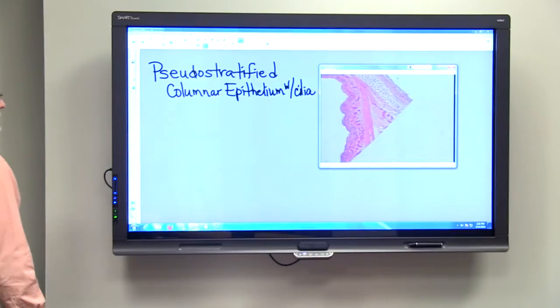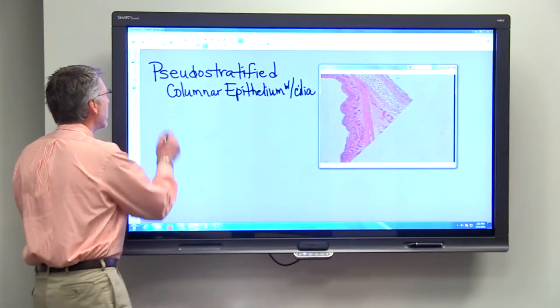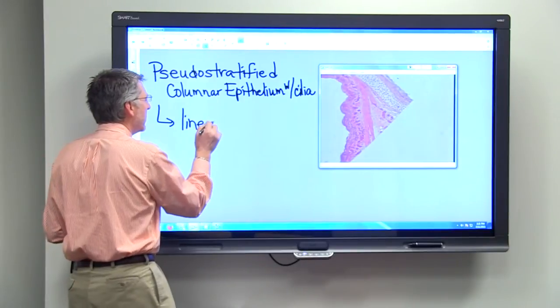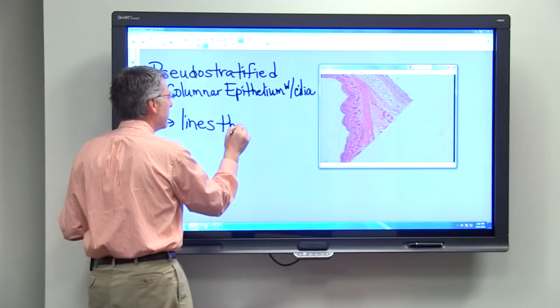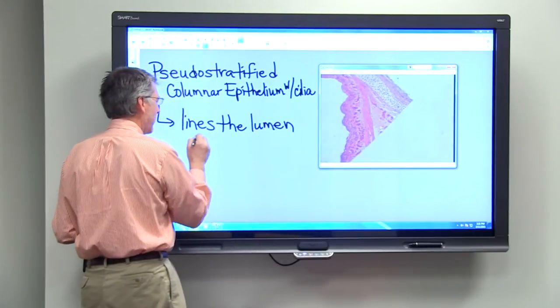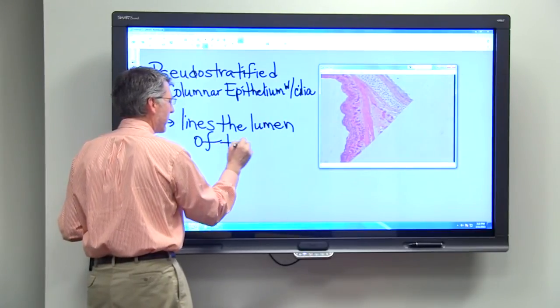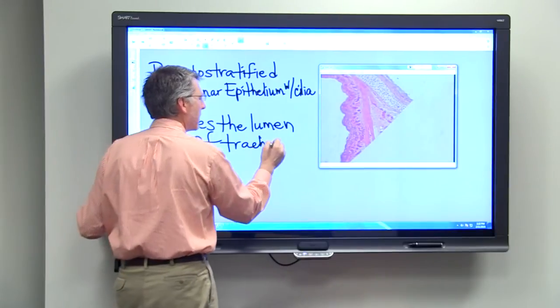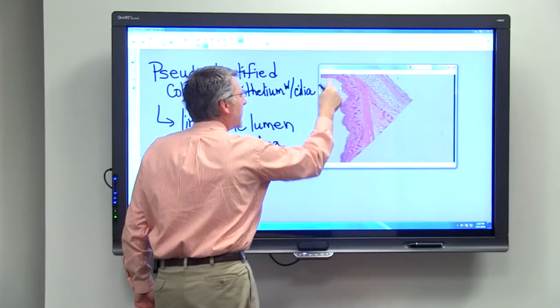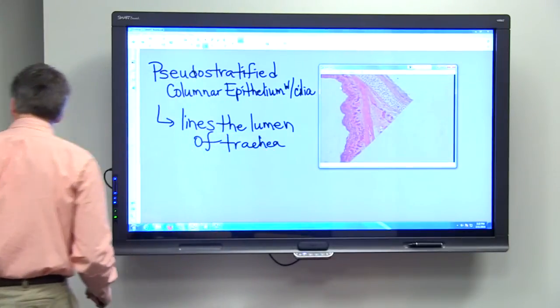The pseudostratified columnar epithelium with cilia lines the lumen of the trachea. We want to go up on a higher power and observe this tissue lining the lumen.